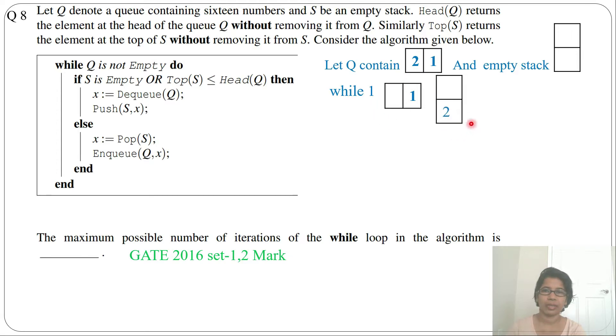So next in second while, now the queue and stack contain this. Is stack empty? No. So now I'll just check, or top of S less than head of Q? So here top of S is 2 and head is 1, so it is not less than this. So we'll go to the else condition.